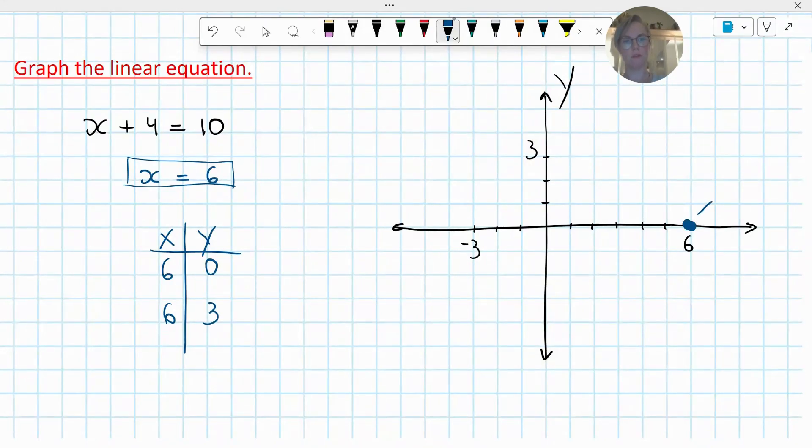So I've got this one, 6 on the x, 0 on the y, and then the next one, 6 on the x, and 3 on the y. When I have two points, that's enough.